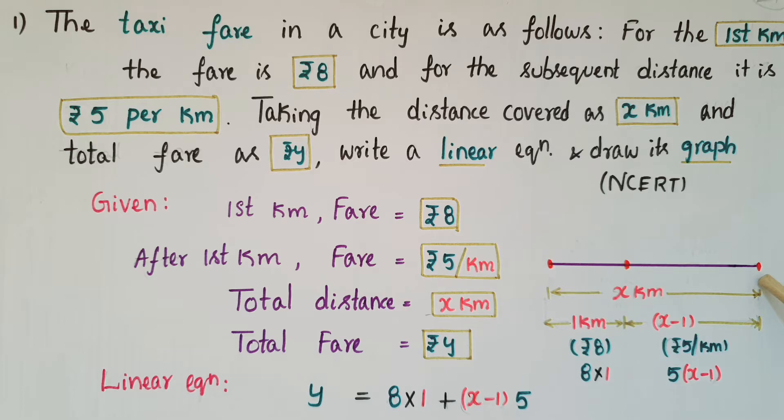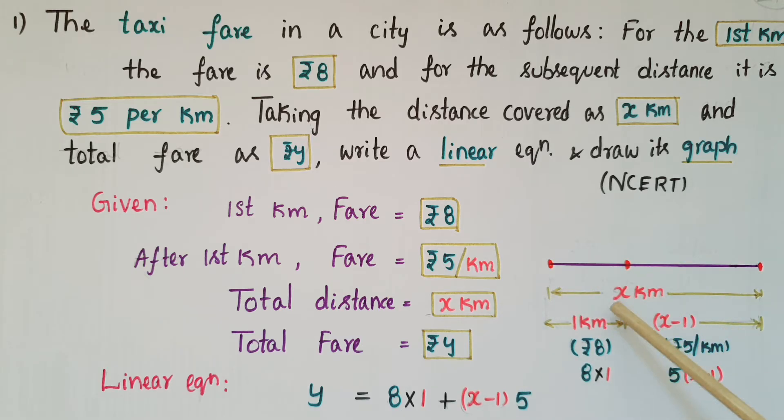So total distance here is x kilometer. For first kilometer the fare is 8 rupees and after first kilometer the distance is x minus 1, the remaining kilometers. So for 1 kilometer the fare is 8 rupees, so 8 into 1, and for remaining kilometers that is x minus 1 into 5 because per kilometer that is 5 rupees. So x minus 1 kilometers, the fare is 5 into x minus 1.